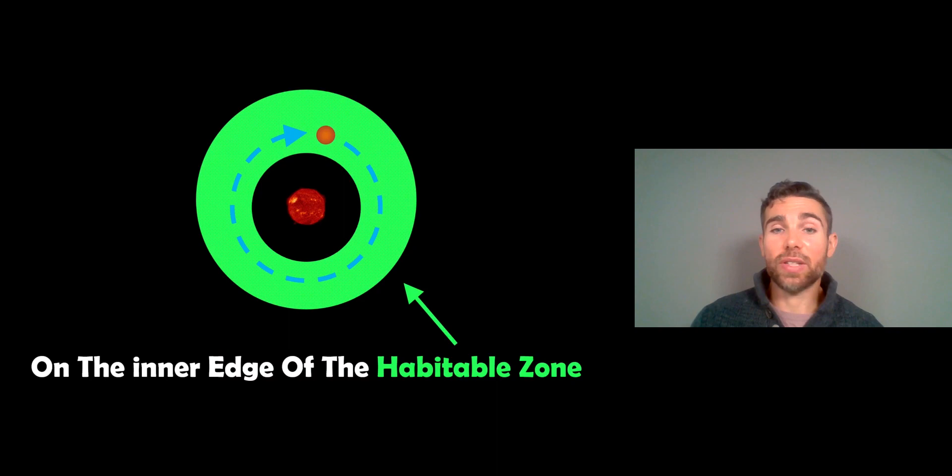Now, even though it's very close, because it is a red dwarf, and it's a very small star, it can still be in the habitable zone. So Proxima Centauri b is on the inner edge of the habitable zone. So potentially a bit hotter than the Earth because it's actually on the inner edge of it, where it would get more energy from its star than maybe what the Earth might do.